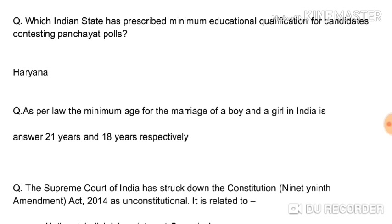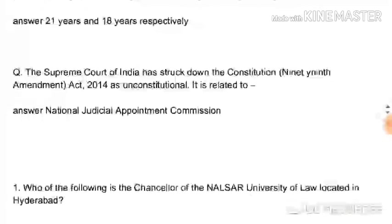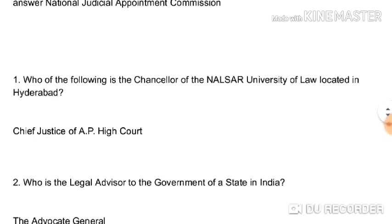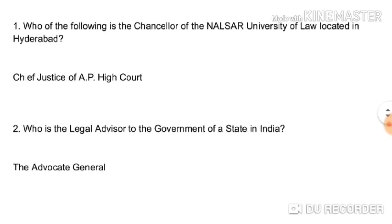As per law, the minimum age for marriage of a boy is 21 years and for a girl is 18 years in India. The Supreme Court of India struck down the 99th Constitutional Amendment 2014 as unconstitutional — it relates to the National Judicial Appointments Commission, regarding the appointment of judges.